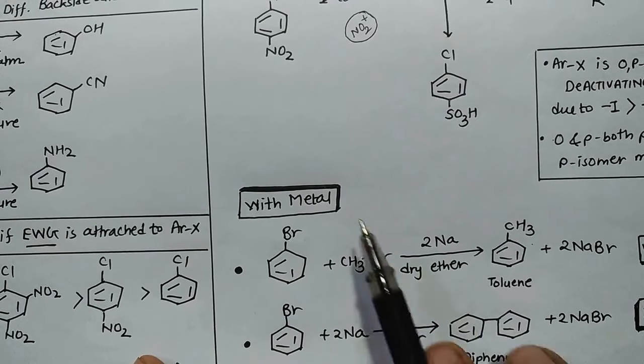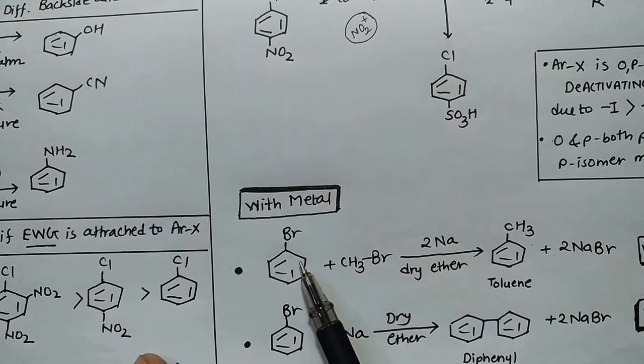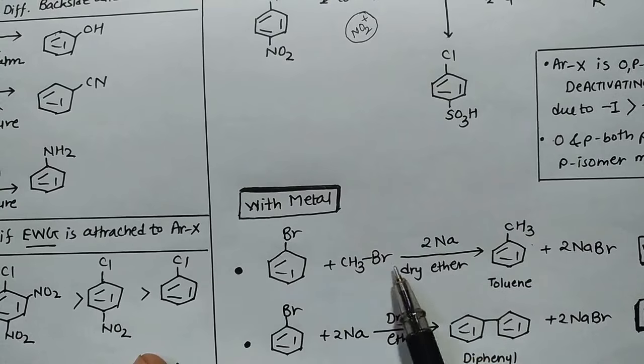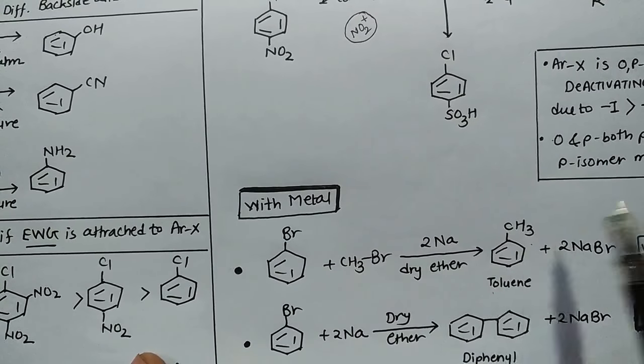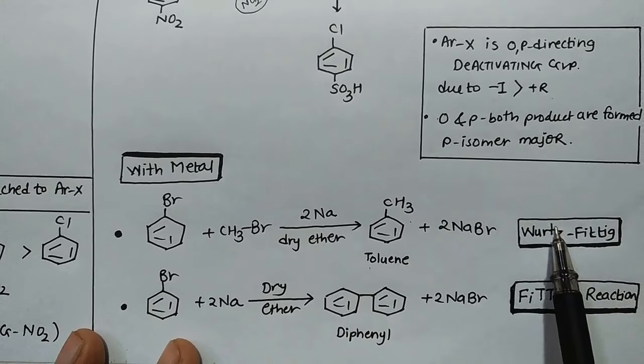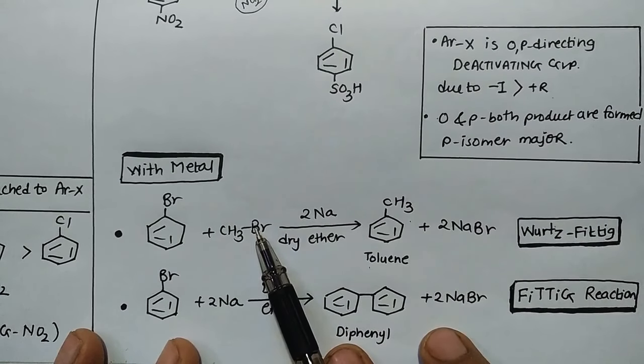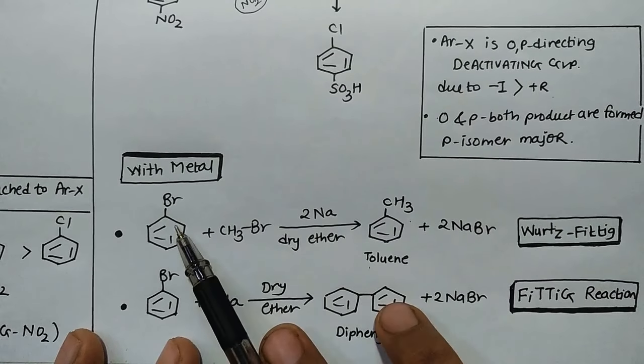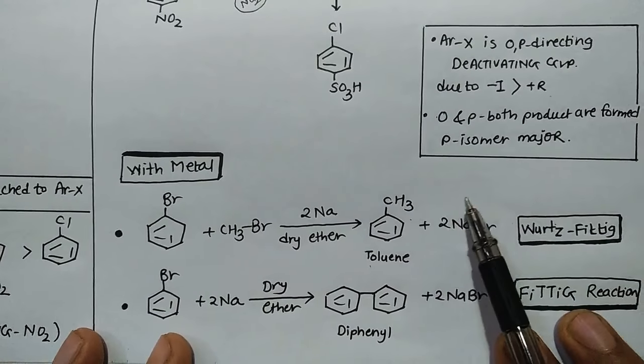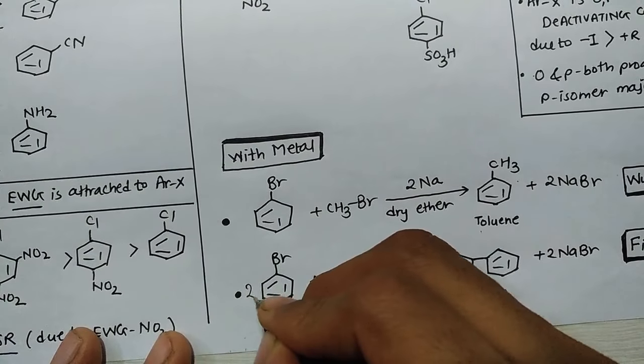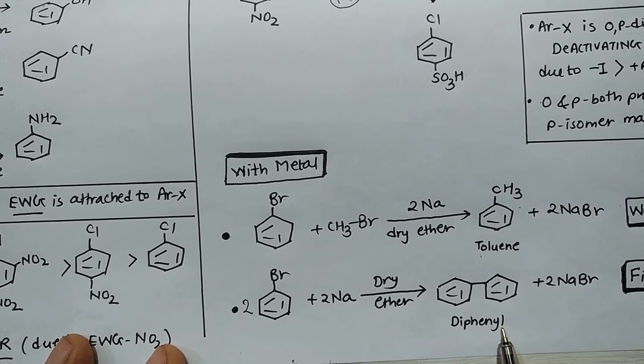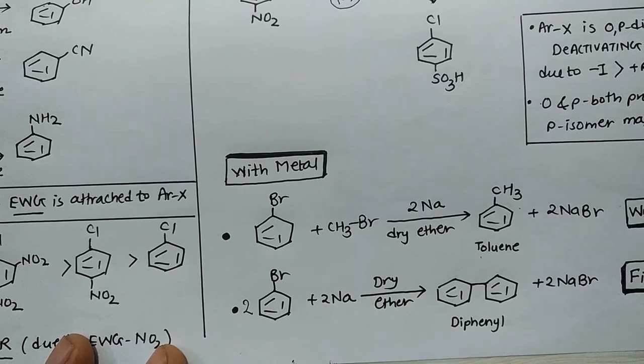Now we come to the third category of reaction, that is reaction with metal. If you take aryl halide and alkyl halide and treat with sodium salt, NaBr will come out and what you will get is toluene. This reaction is known as Wurtz-Fittig reaction. If you only use alkyl halide, the reaction is referred as Wurtz reaction. But if you take aryl halide, it is Wurtz-Fittig reaction. And if you take only aryl halide, meaning both are bromobenzene, you will get diphenyl, which you also call biphenyl.